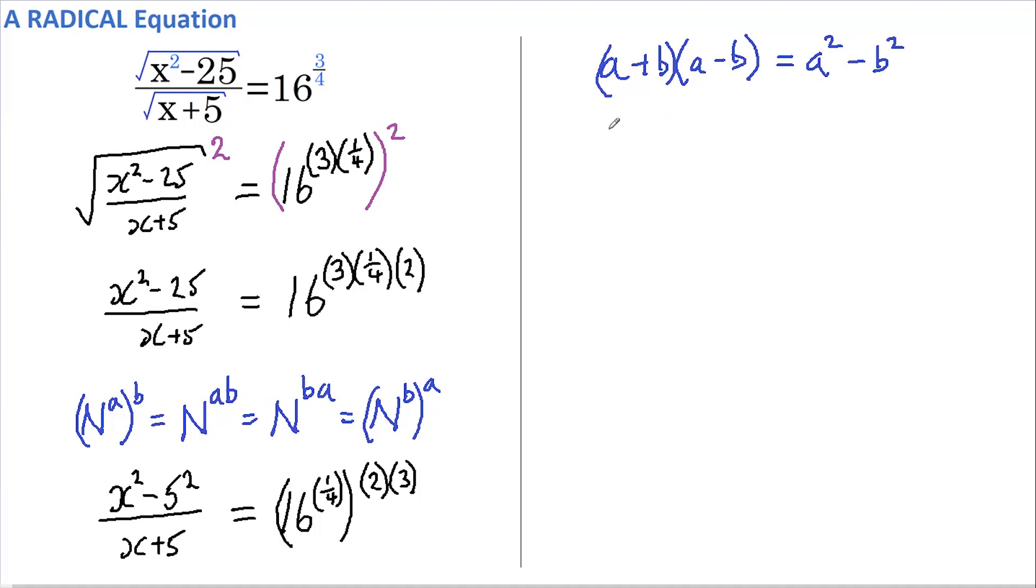Therefore, x squared minus 5 squared becomes x plus 5 multiplied by x minus 5. And we still have x plus 5 on the bottom.